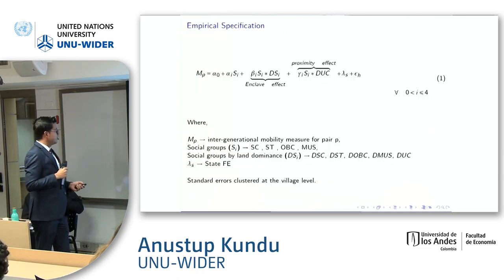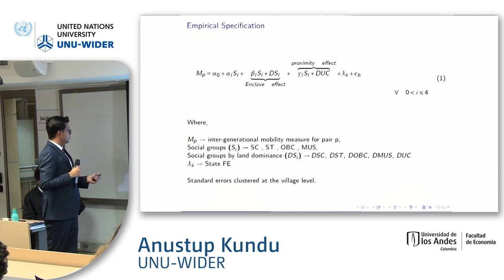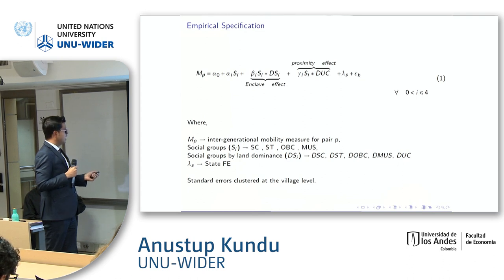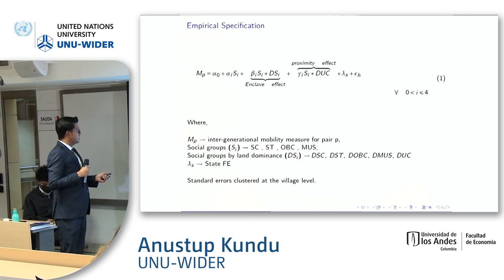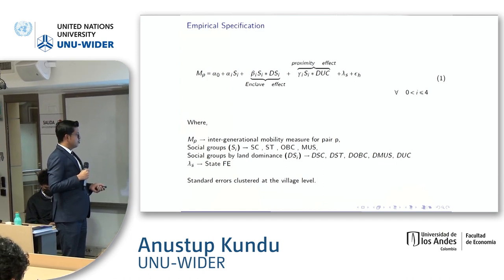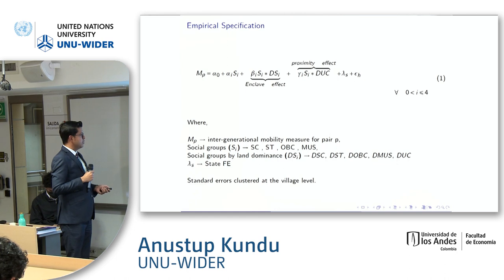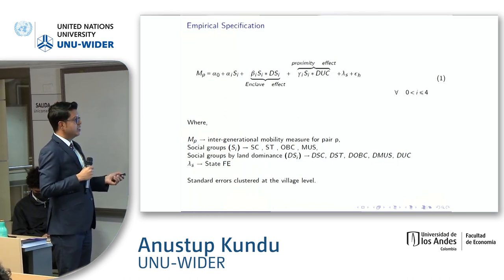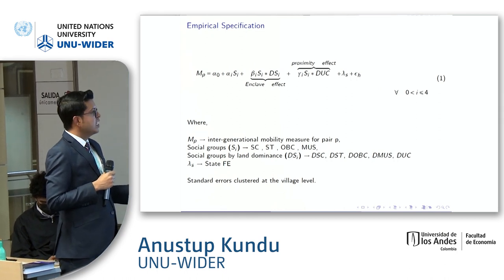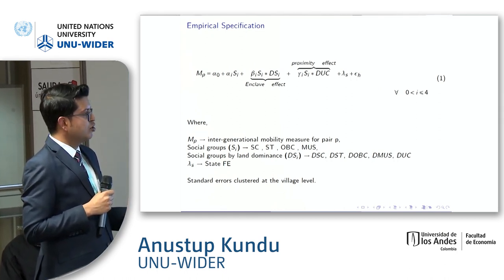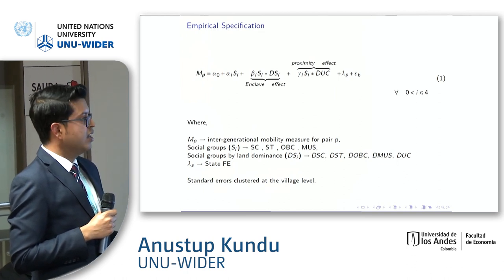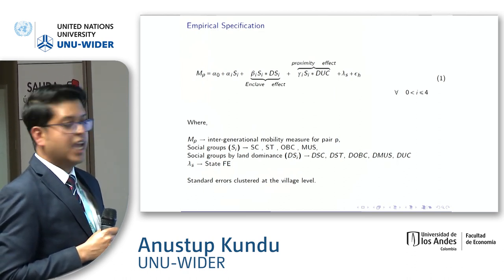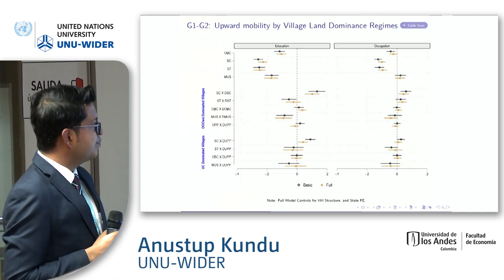What is our empirical specification? On the left-hand side is the intergenerational mobility measure — for father-son or grandfather-father pairs. This includes a social group indicator where groups are Scheduled Caste, Scheduled Tribe, OBCs, and Muslims. We then examine whether being the dominant group in the village affects mobility — does it help or hurt? We call this the enclave effect. The proximity effect captures whether a social group living in an upper caste dominated village benefits or is hurt.